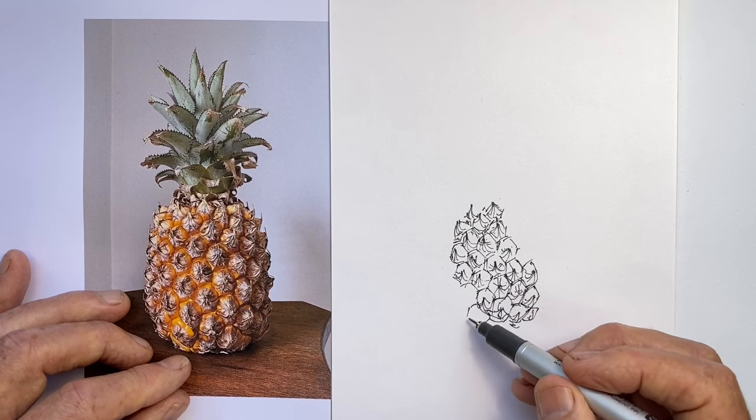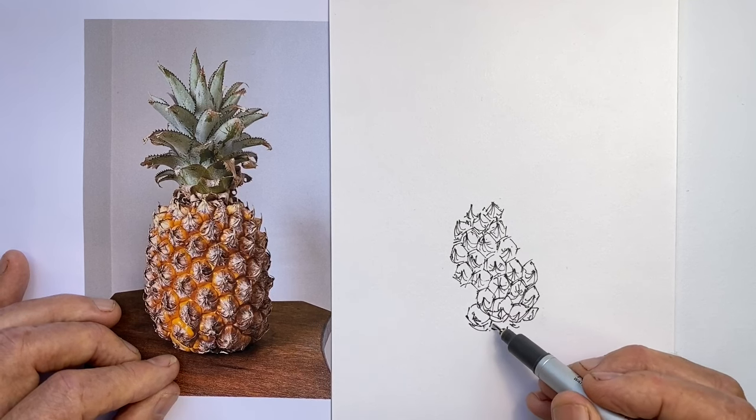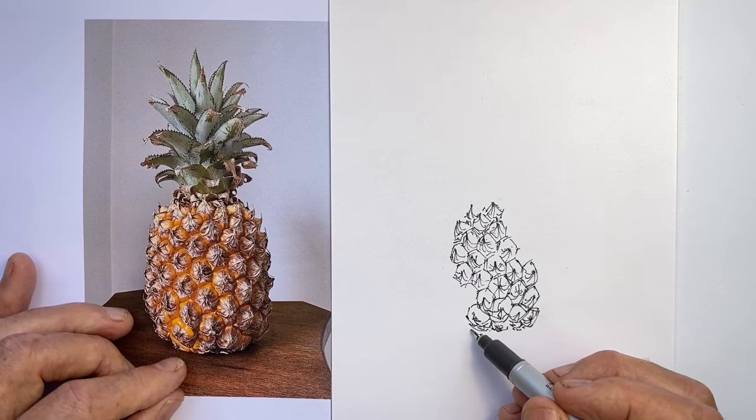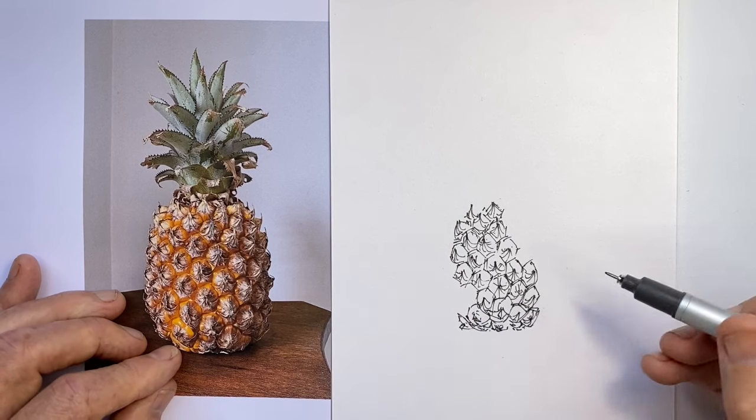I've decided to not particularly worry about hatching for shade and shadow on the lower part of the pineapple, because I think there's going to be enough lines there for the scale with which I'm drawing. Now, the other thing we need to do as we start to approach the edges, the left and right edges and the base of the pineapple, is to start to establish the overall shape as well.